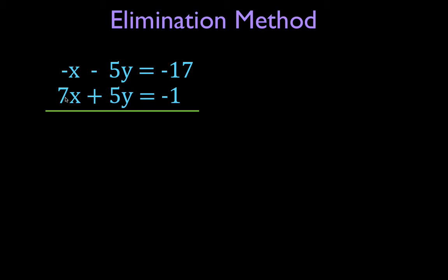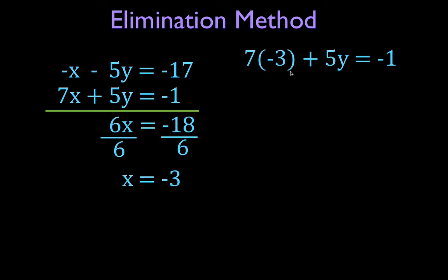-x + 7x is 6x, -5 and +5y is 0. And then I'm going to add up the constants and I get -18, divide each side by 6 and I get that x equals -3. Now again, I'm going to plug this x value into one of these two equations.